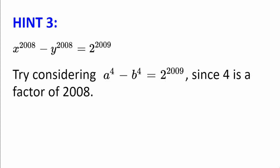Hint number 3. Try considering a to the power of 4 minus b to the power of 4 equal to 2 to the power of 2009, since 4 is a factor of 2008 and a to the power of 4 minus b to the power of 4 has a nice factorization.